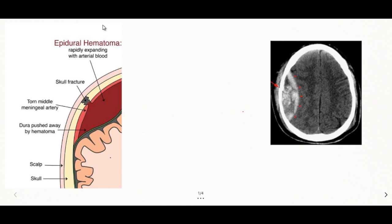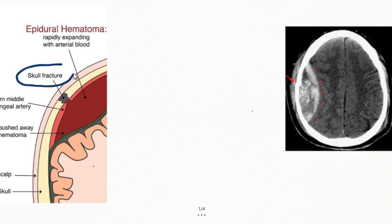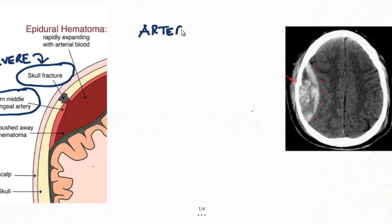Whenever there is trauma to the head, epidural hemorrhage or epidural hematoma can happen. For epidural hematoma to occur, there has to be a very severe trauma — severe enough to cause a skull fracture. The site usually affected is the middle meningeal artery, which gets ruptured or lacerated due to the trauma. Essentially, epidural hematoma is arterial in origin.